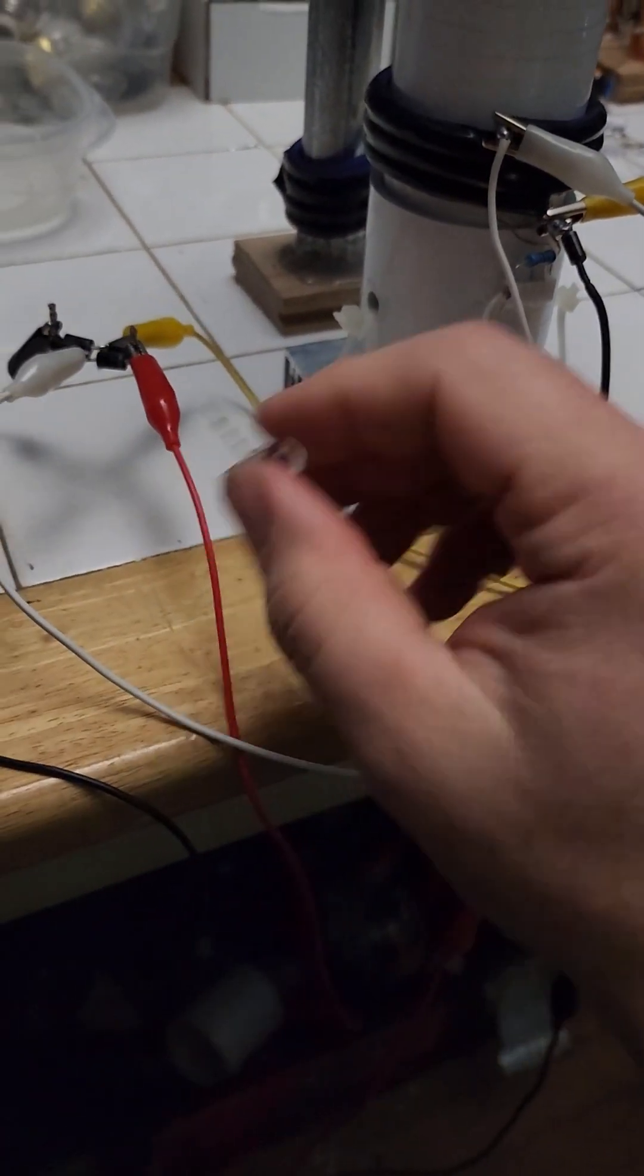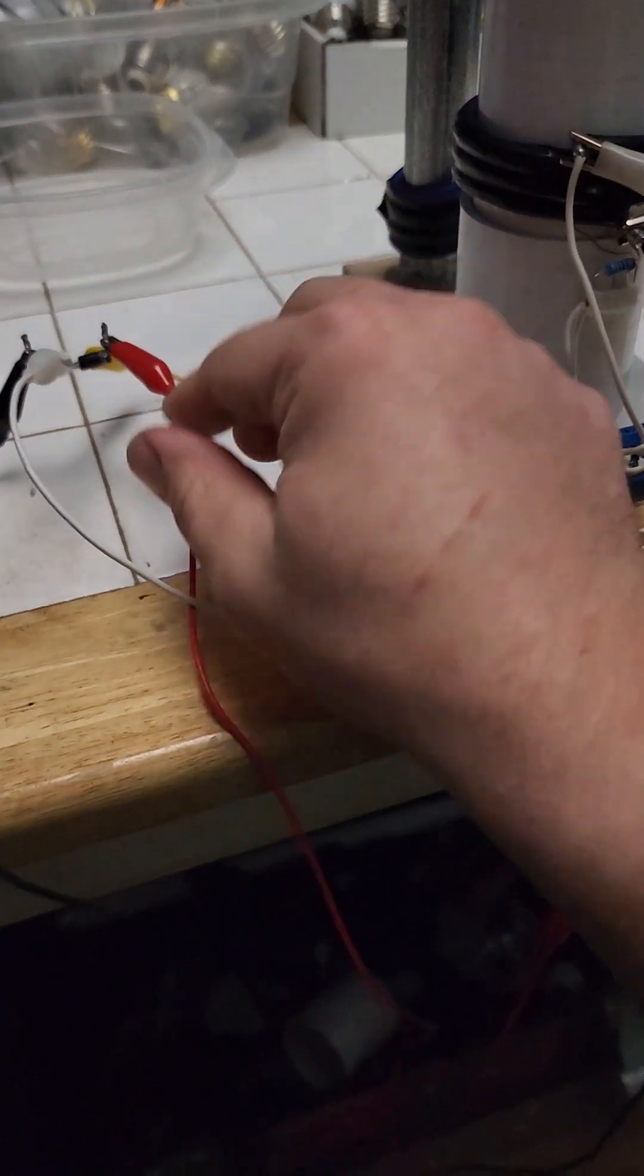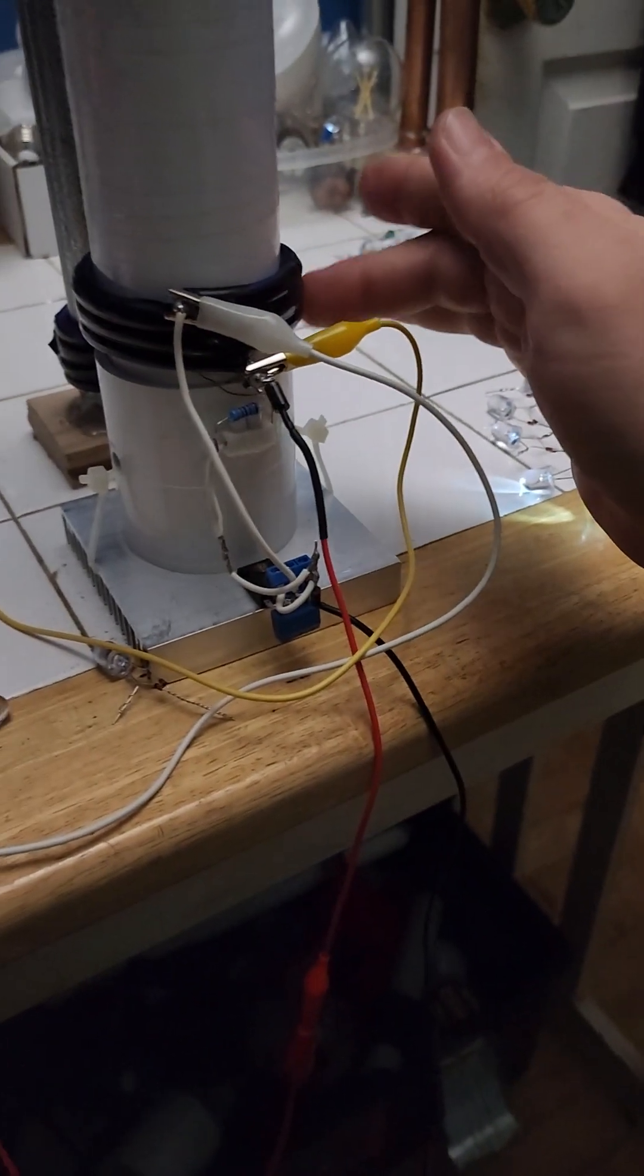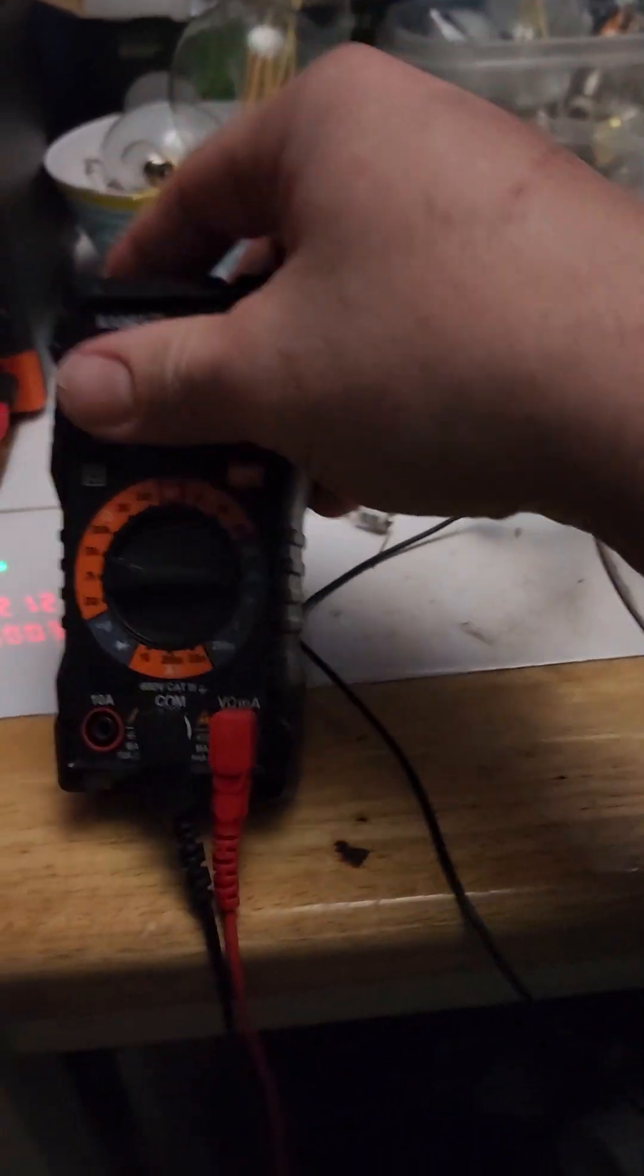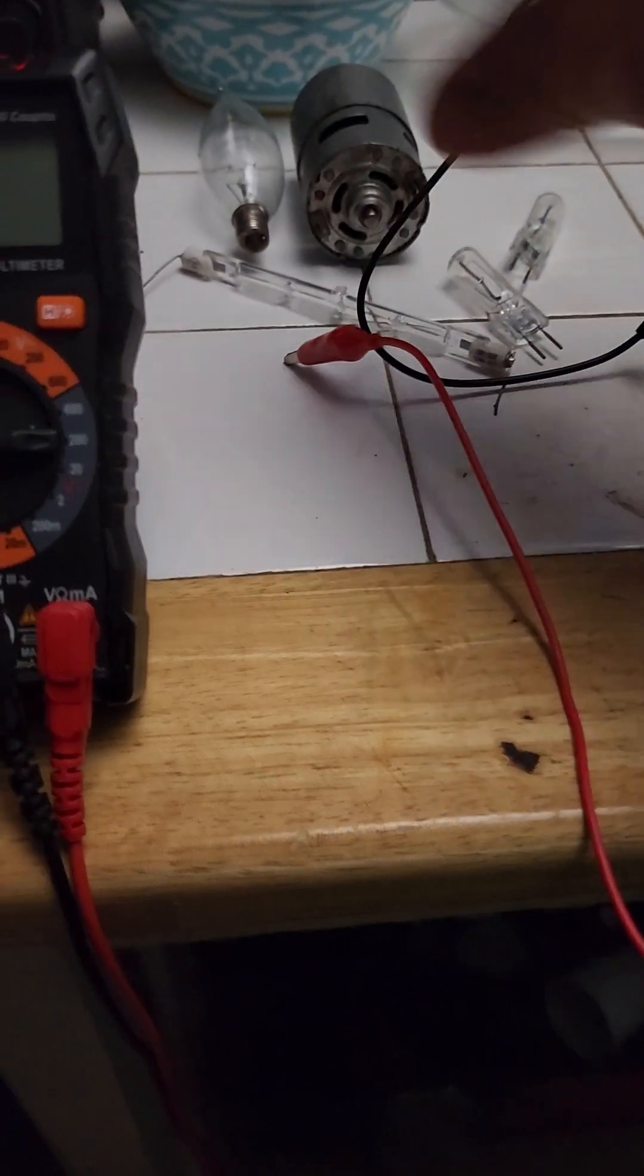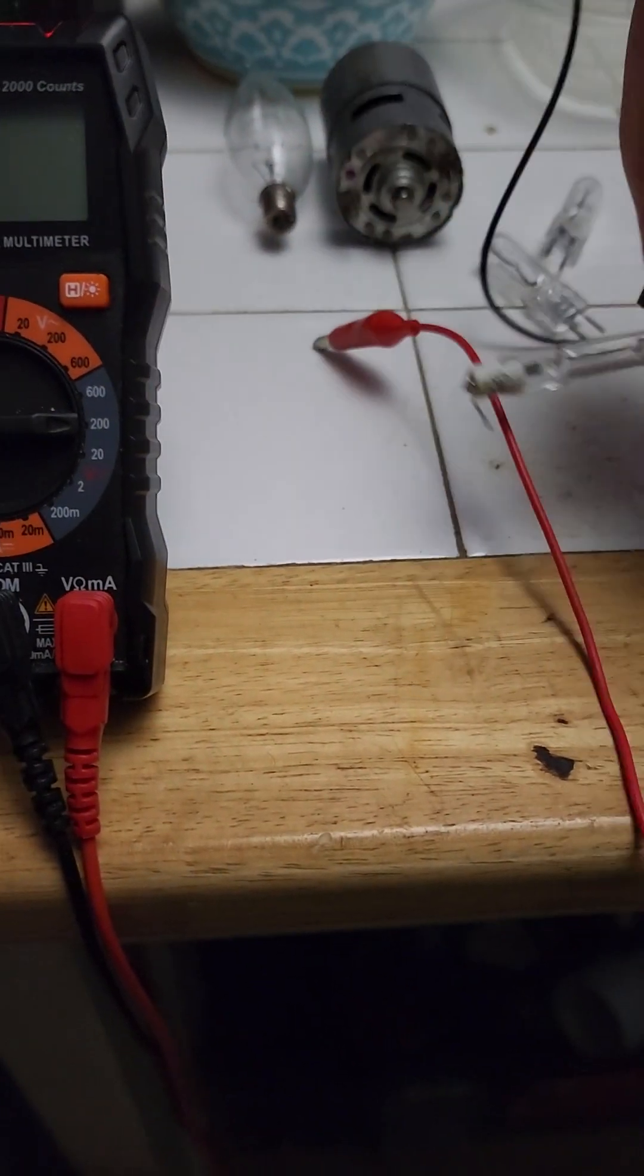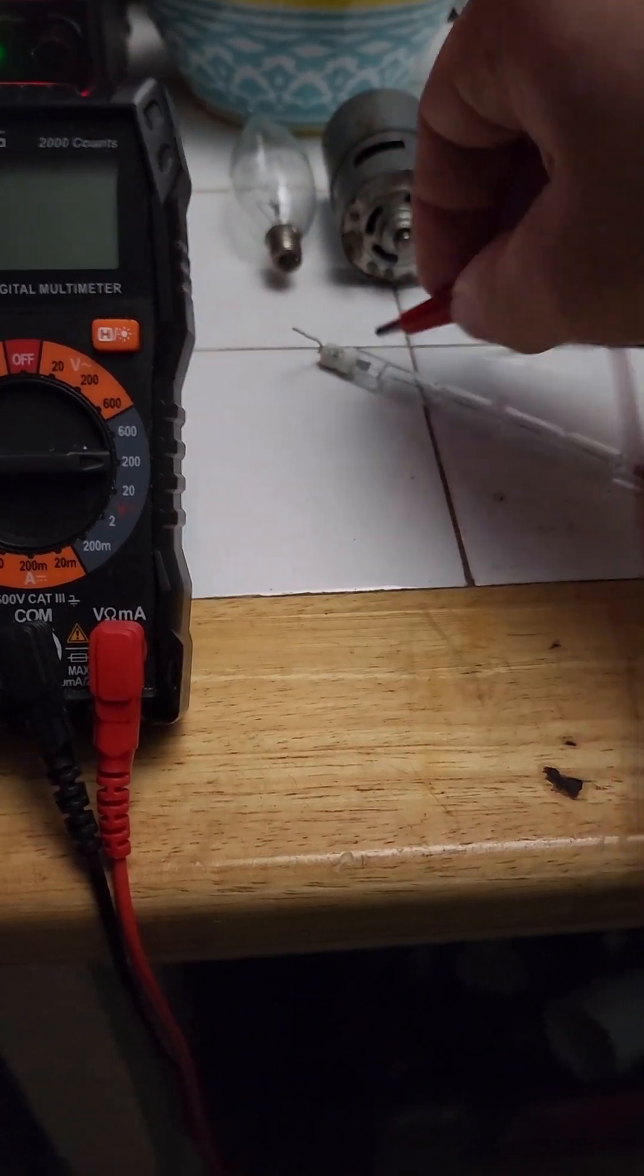As you can see, the bridge rectifier is connected to the primary of the coil. When that field collapses, it energizes the rectifier. Now I will take that output and we'll hook it to a halogen bulb, 150 watt, and we'll get it to one quarter intensity.